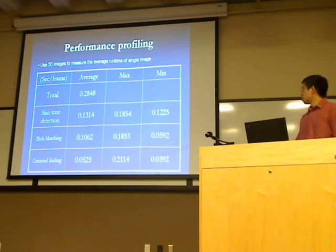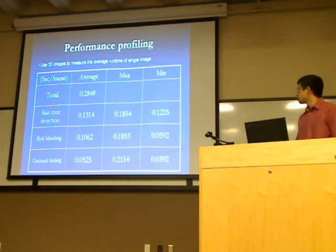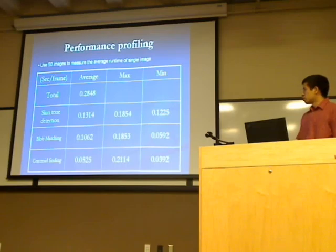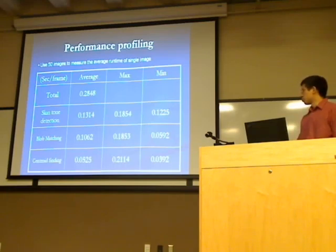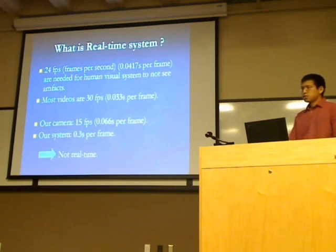The maximum time for a single image in the skin tone detection module is around 0.18 seconds, and the minimum is around 0.12 seconds. We can also see the data for block matching and centroid finding.